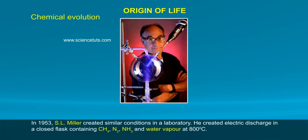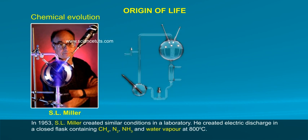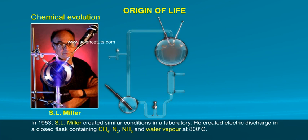In 1953, S.L. Miller created similar conditions in a laboratory. He created electric discharge in a closed flask containing CH4, N2, NH3, and water vapor at 800 degrees centigrade.